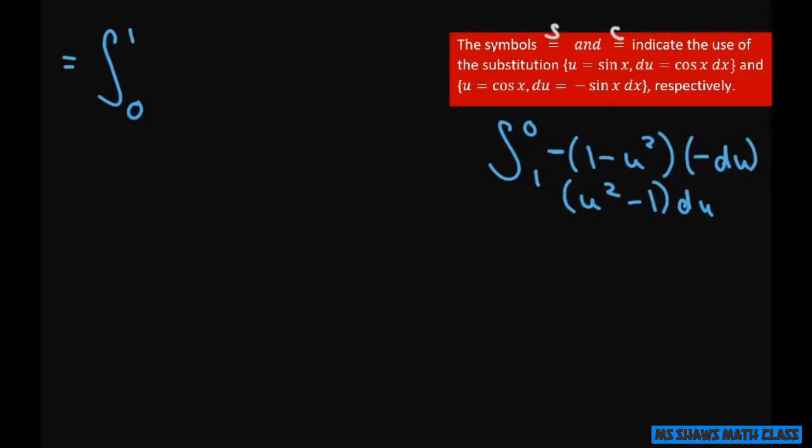And then I'm going to change that, so we have the square there. So when you do that, then let's go ahead and fix this up, and that's going to be 1 minus 2u squared plus u to the 4th du.